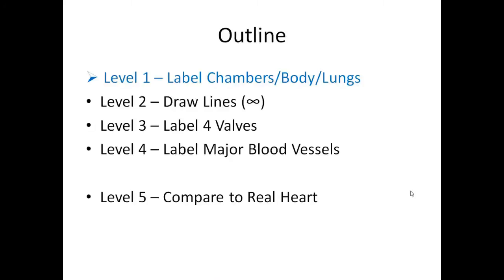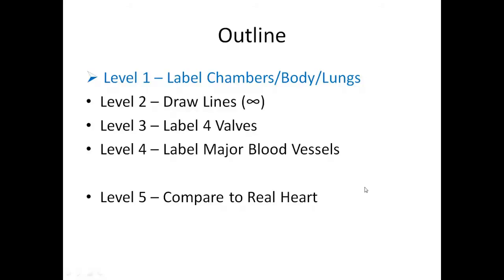We're going to start off simply by drawing a diagram, and we're going to do this in five different steps or five different levels. The first level, we're going to draw the four chambers of the heart, label them, and include the body and the lungs. The second level, we'll draw the lines representing this infinity sign that will help you know how to label it.